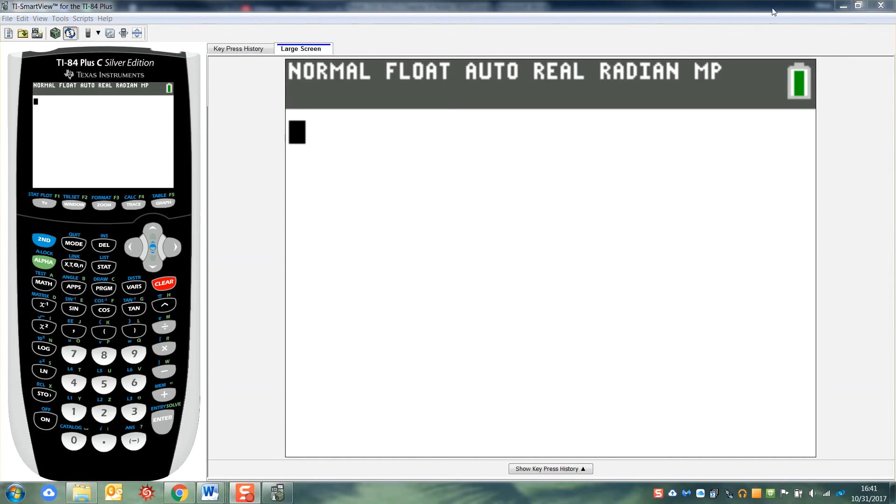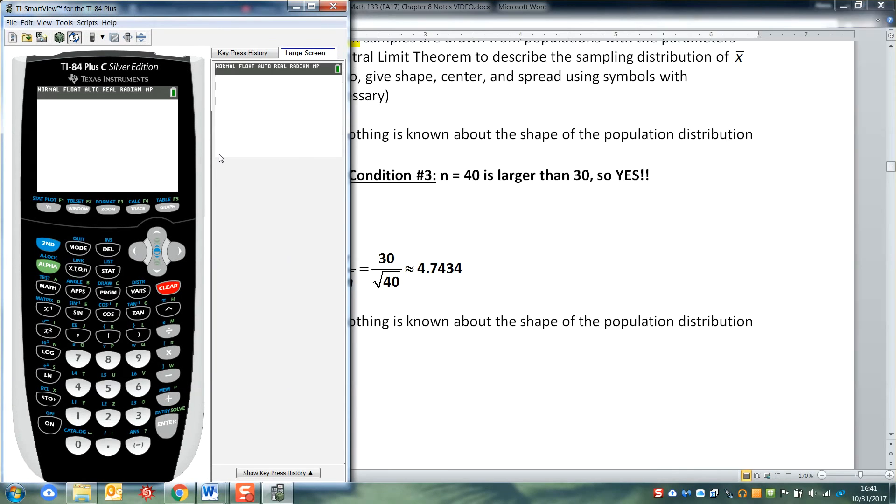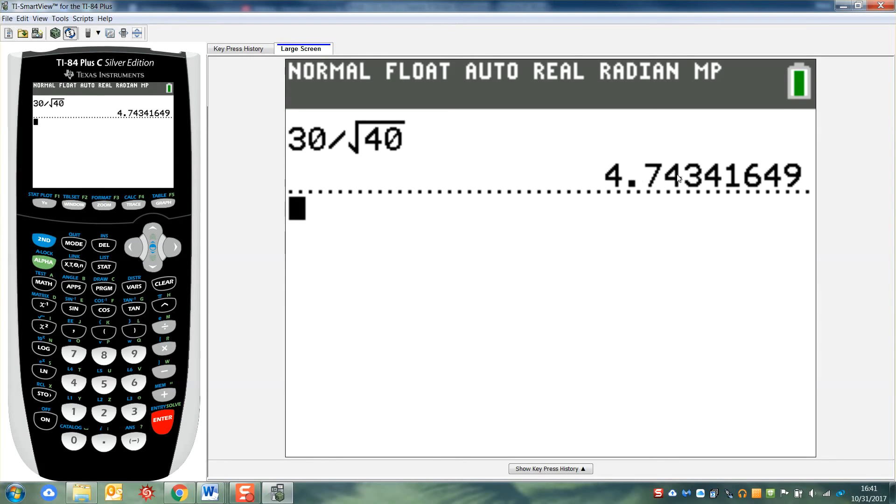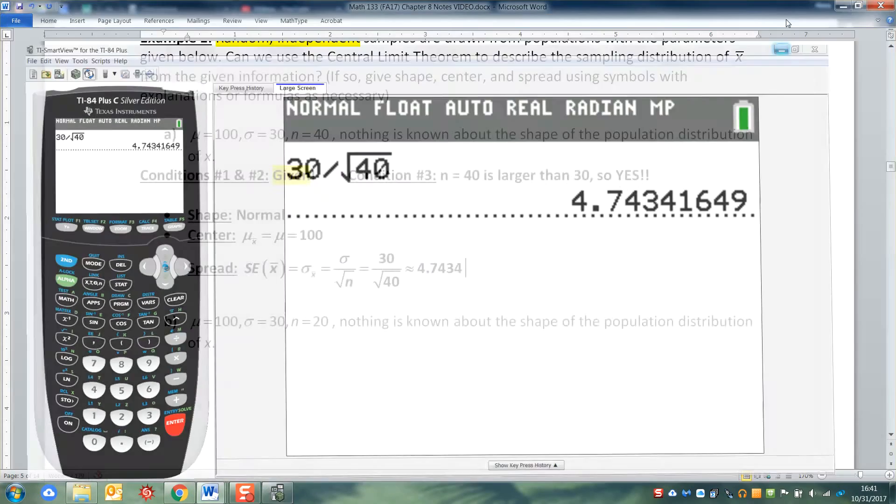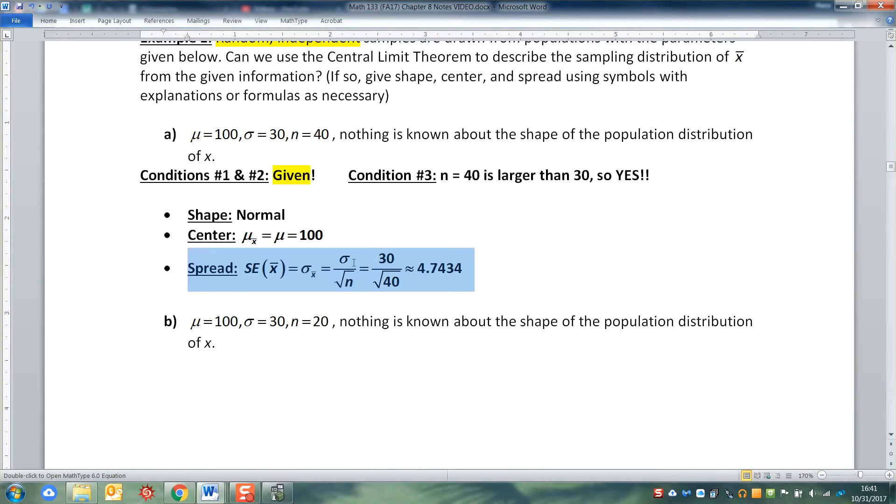And if you use a calculator, you can find that that's 4.7434. Just in case you need to see the calculator entry for this, it's 30 divided by square root, which is above your x squared button. So second square root, second x squared, and then 40. Enter. And there you have it, 4.74. Just like I said it was. So there's your spread.